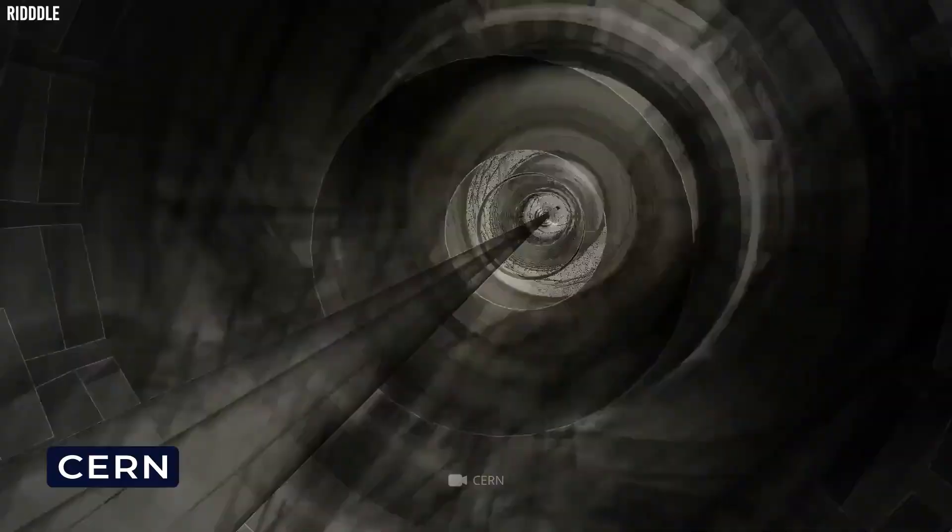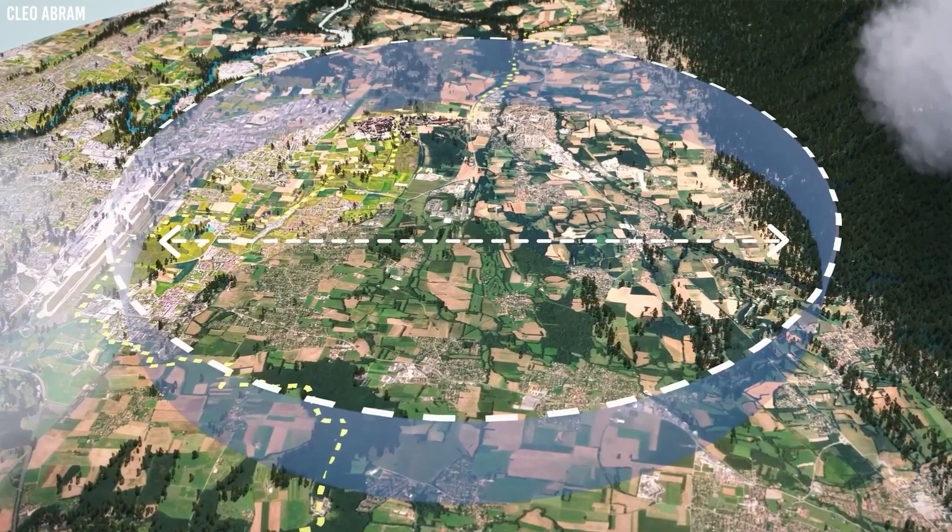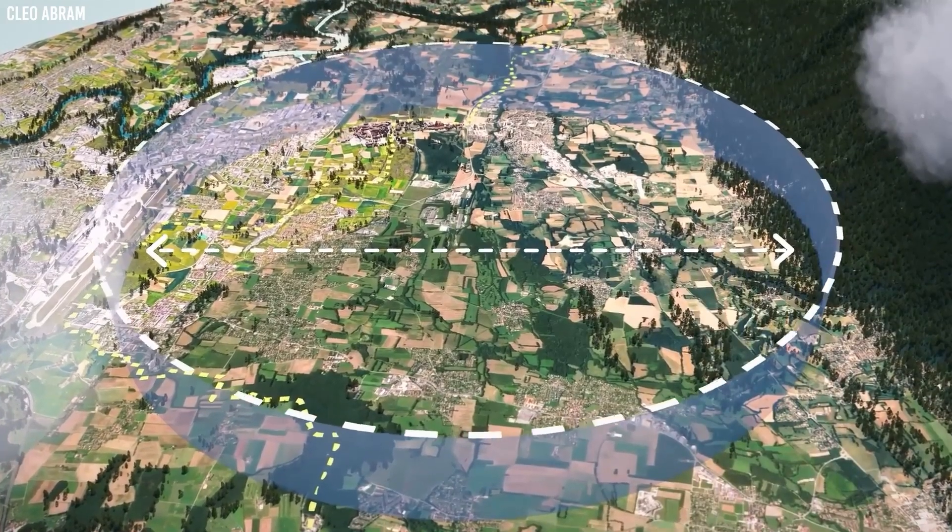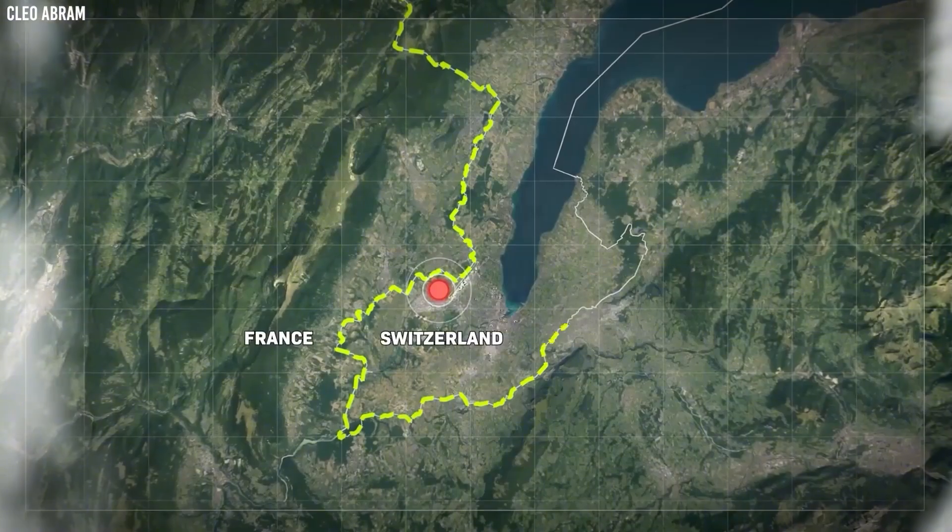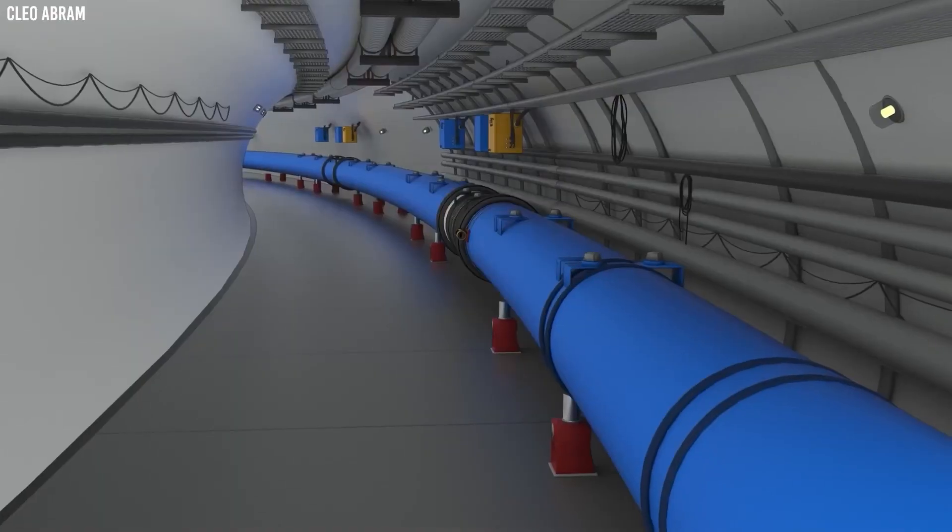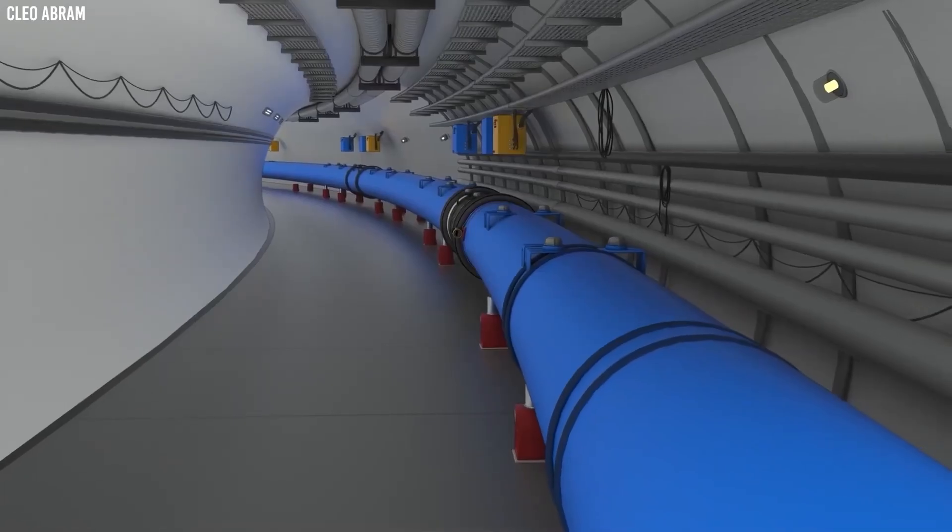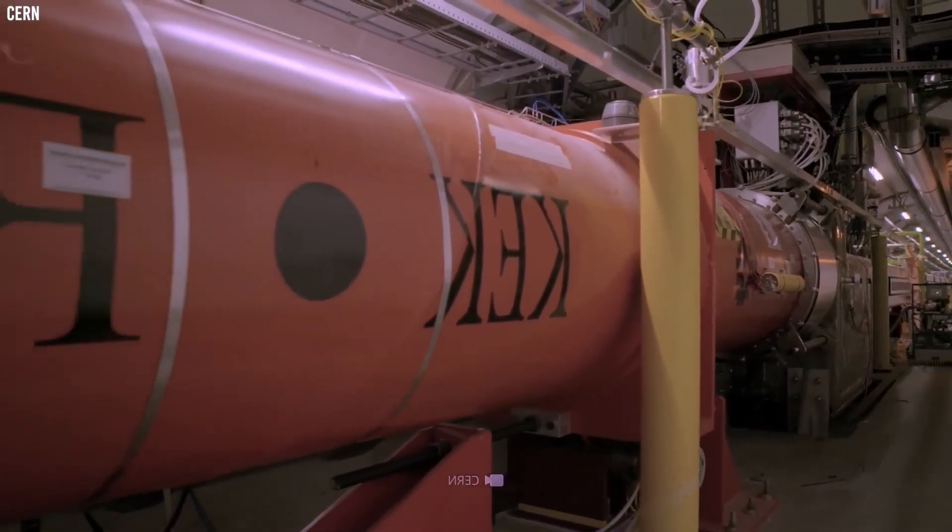CERN, or the European Organization for Nuclear Research, is one of the world's largest and most esteemed institutions in the field of scientific research. It is located near Geneva, on the border between Switzerland and France, and began its operations in the mid-1950s.